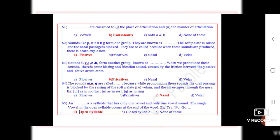Question number 61: Dot dot dot are classified to the place of articulation and second manner of articulation. The correct option is B, consonants.